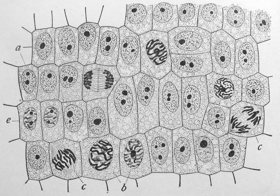Many cells also have structures which exist wholly or partially outside the cell membrane. These structures are notable because they are not protected from the external environment by the semi-permeable cell membrane. In order to assemble these structures, their components must be carried across the cell membrane by export processes. Many types of prokaryotic and eukaryotic cells have a cell wall. The cell wall acts to protect the cell mechanically and chemically from its environment and is an additional layer of protection to the cell membrane. Different types of cells have cell walls made up of different materials: plant cell walls are primarily made of cellulose, fungi cell walls are made of chitin, and bacteria cell walls are made of peptidoglycan.